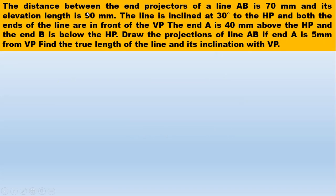The data is: the distance between end projectors of line AB is 70mm, that means the ends of the line are 70mm apart, and its elevation length — that is length of front view — is given as 90mm. The line is inclined at 30 degrees to the HP, so that is nothing but theta, the true inclination with respect to HP. Both ends of the line are in front of VP.